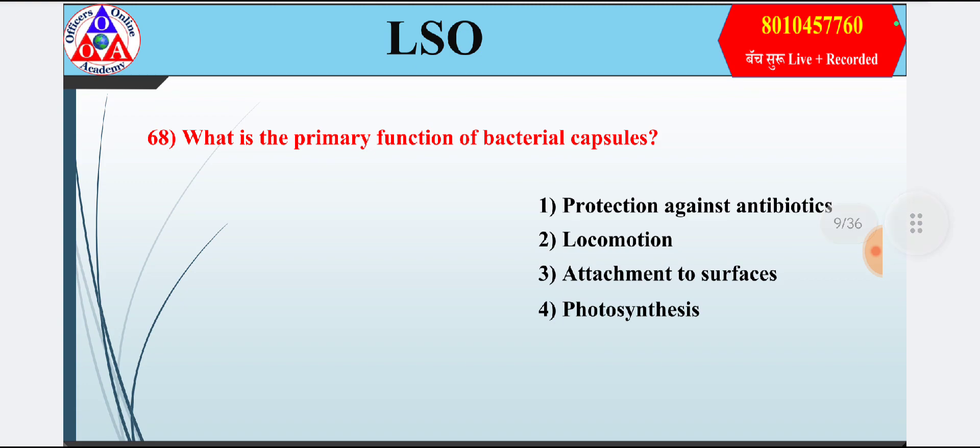Question 8: What is the primary function of bacterial capsules? Option 1: protection against antibiotics; option 2: locomotion; option 3: attachment to surfaces; option 4: photosynthesis. Answer is option 3 — attachment to surfaces.